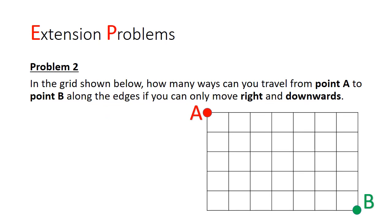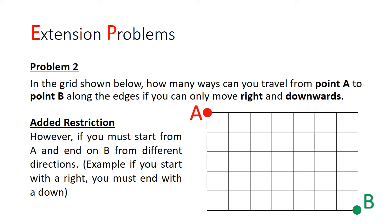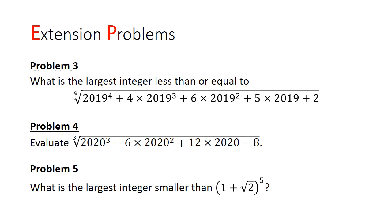Here's problem 2. It is similar to problem 1 but on a 6x8 grid, and I'm adding a further restriction. That is, you must start and end with different directions. For example, if you start with a rightward movement, you have to end with a down step.